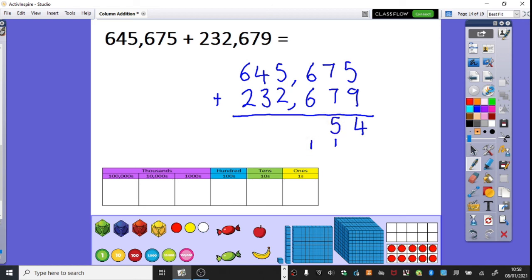600s add 600s is 12 hundreds. Add one more hundred is 13 hundreds. Carry over our 10 hundreds. 5,000 add 2,000 is 7,000. And another 1,000 there is 8,000.